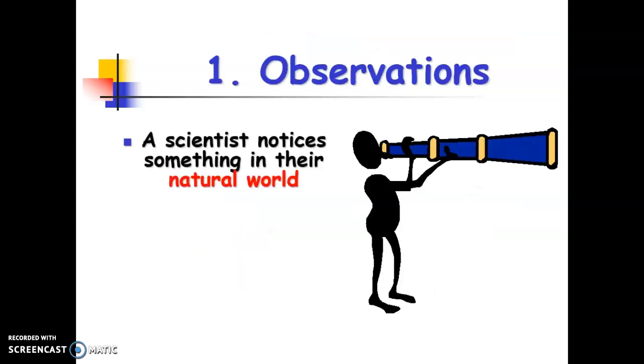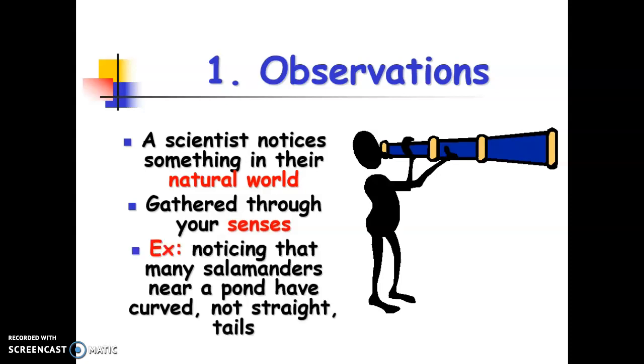First are observations. So observations are gathered from the natural world. Scientists may notice something, for example, or decide to study something specific. Some of these are just observations that we notice, and some of them are goals or tasks that we're trying to complete, like maybe trying to find a cure for a certain disease. These are always gathered through our senses. So maybe we're making some observations or noticing something around the world. Maybe even it's a need.